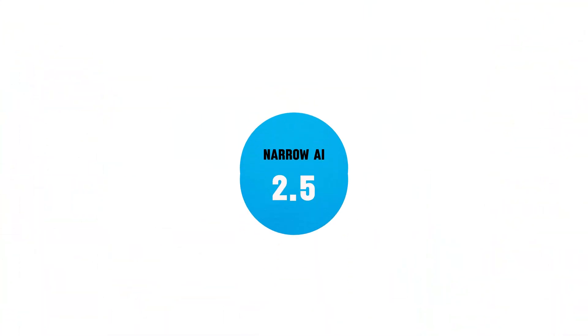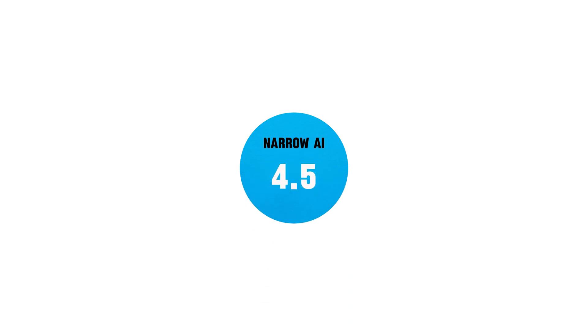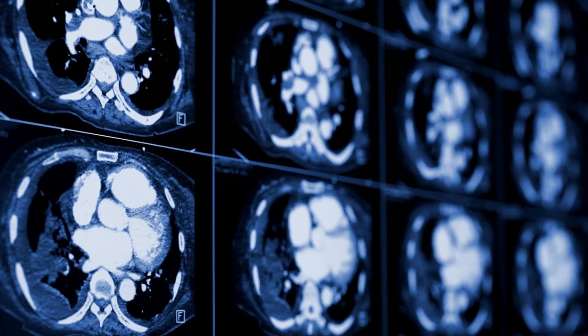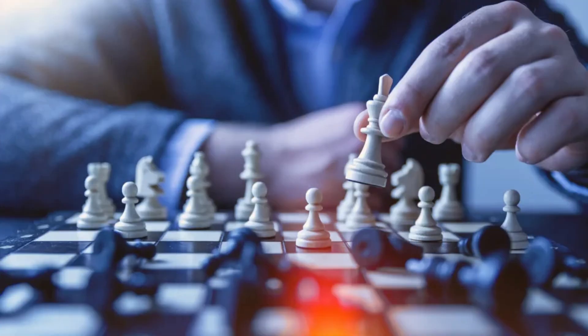And here's the catch: narrow AI can get better and better at its one task if you give it more data and more computing power. But you can't take what it learned in one area and apply it in another. A system that's world-class at spotting cancer in scans can't use that skill to be a chess master.